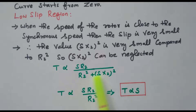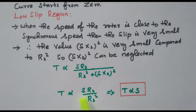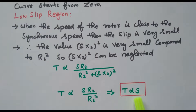In the normal torque equation S·R2 / (R2² + S²X2²), we neglect the S²X2² term. It becomes S·R2 / R2², which simplifies to show that torque is directly proportional to slip. So when slip increases, torque also increases. During the low slip region, torque is directly proportional to slip — both are directly proportional.